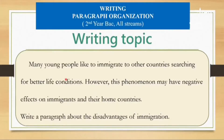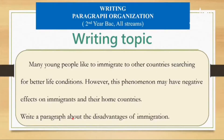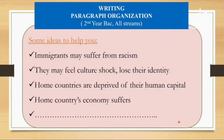The writing topic is: 'Many young people like to immigrate to other countries searching for better life conditions. However, this phenomenon may have negative effects on immigrants and their home countries.' Write a paragraph with a topic sentence, supporting idea one with detail, supporting idea two with detail, supporting idea three with detail, and a concluding sentence — to make a delicious sandwich again! Write a paragraph about the disadvantages of immigration.